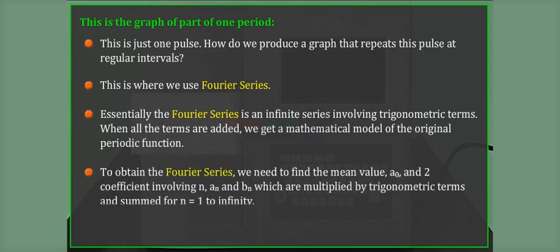To obtain the Fourier series, we need to find the mean value a₀ and two coefficients involving n, aₙ and bₙ, which are multiplied by trigonometric terms and summed for n equals 1 to infinity.